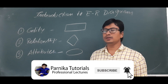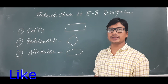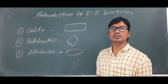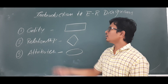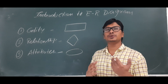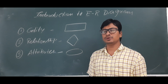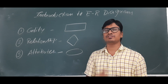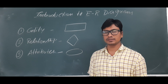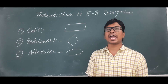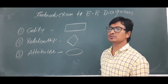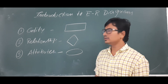Good morning all. Today we will discuss ER diagrams, where E stands for Entity and R stands for Relationship. An entity is a real-time object in your database. For example, if someone gives the requirement that a student is studying in some department, then student and department will act as entities. An entity is represented using a rectangle.